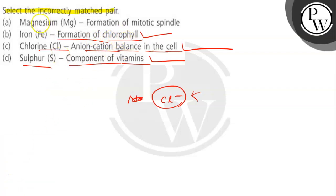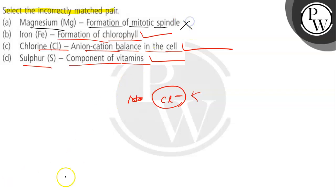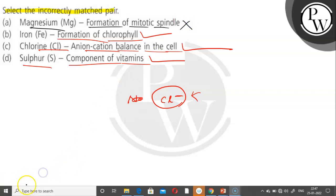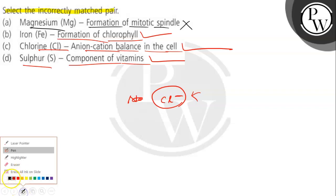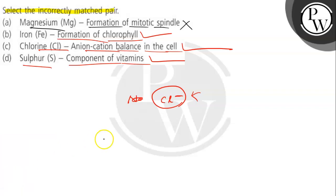But in the fourth statement, magnesium is linked with the formation of mitotic spindle. So this statement is wrong. Why is this statement wrong? What is the actual role of magnesium?